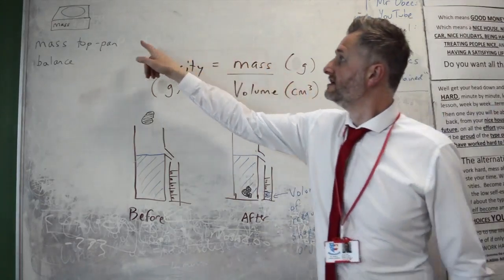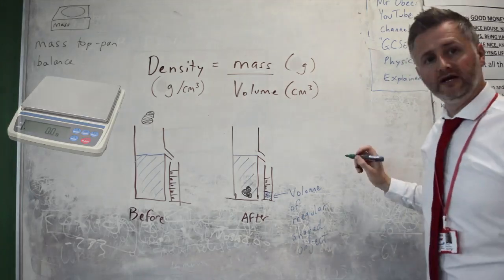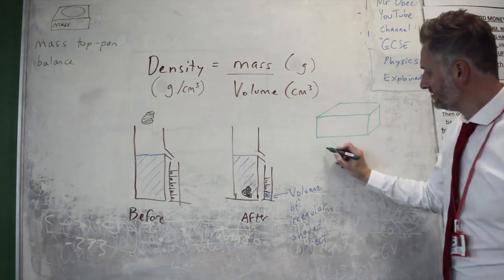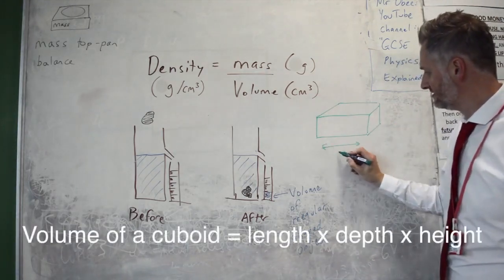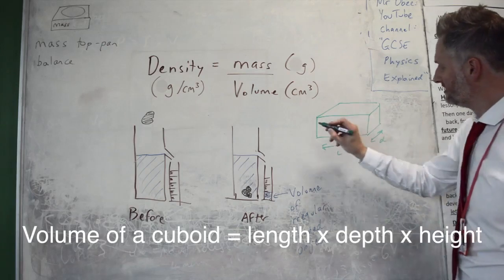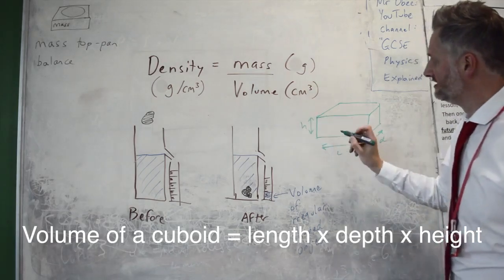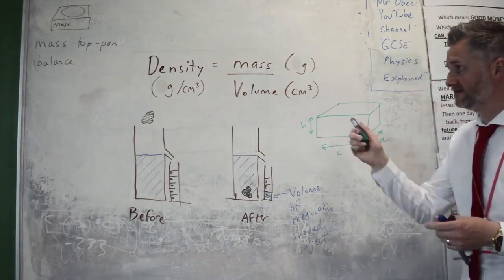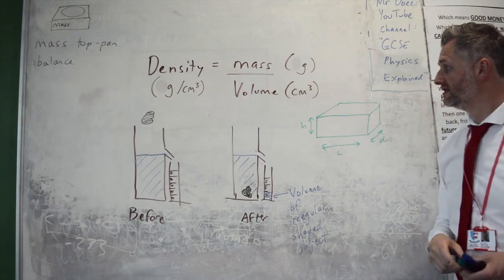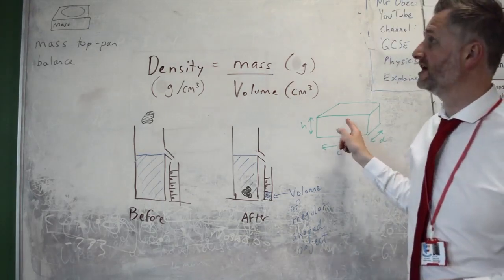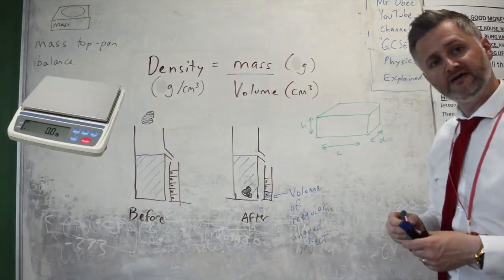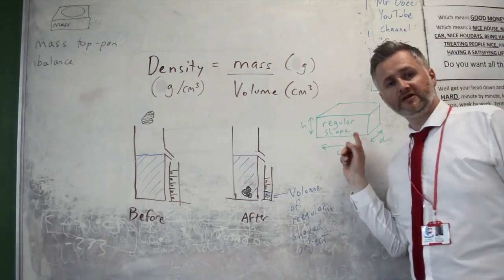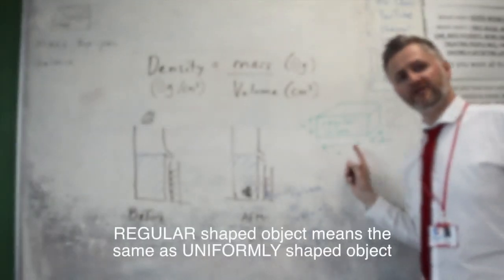To get the mass of the object, just put it on the top pan balance. If you've got a regular shaped object, just do length times depth times height in order to get the volume — just measure that with a ruler — and do the same calculation to get the mass on the top pan balance, just like the other one. Sometimes a regular shape is called a uniformly shaped object.